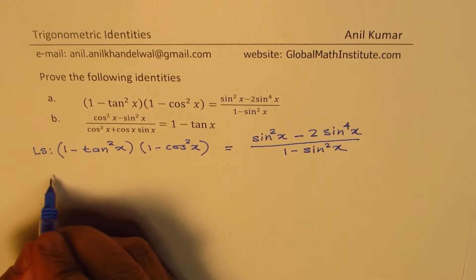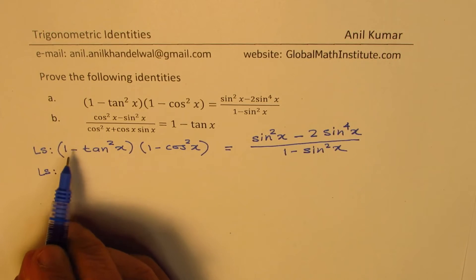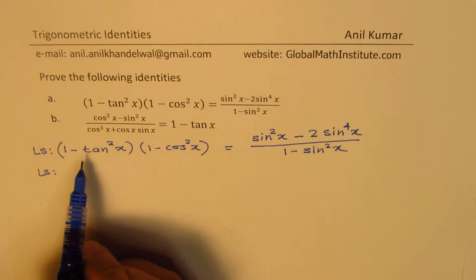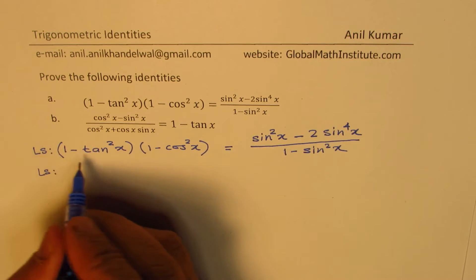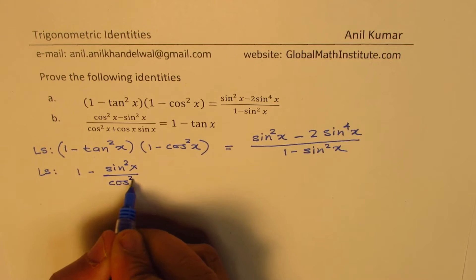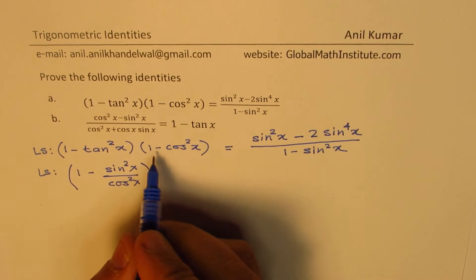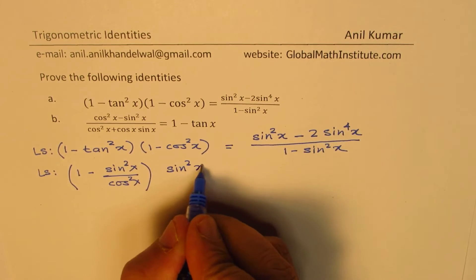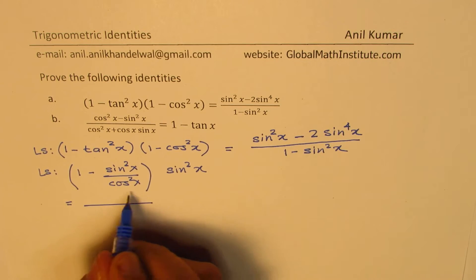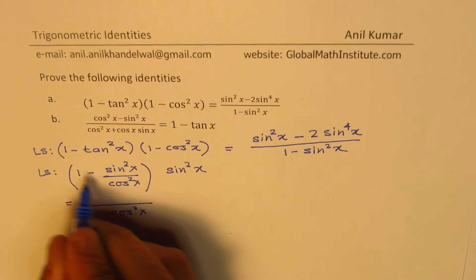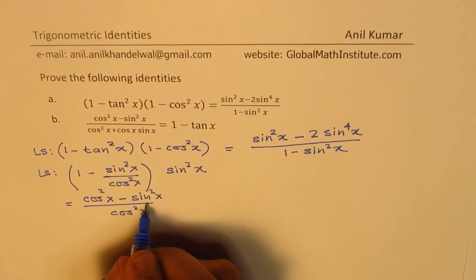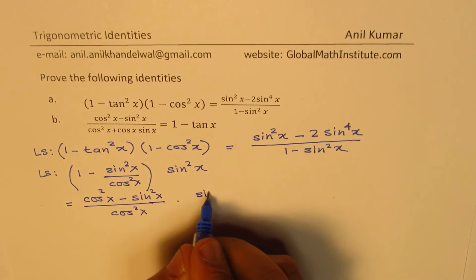I'll begin with the left side: 1 minus tan squared x times 1 minus cos squared x. All these terms can be written in sin, so we write tan squared x as sin squared x over cos squared x, and 1 minus cos squared x equals sin squared x. Taking cos squared x as a common denominator, we get cos squared x minus sin squared x, all multiplied by sin squared x.